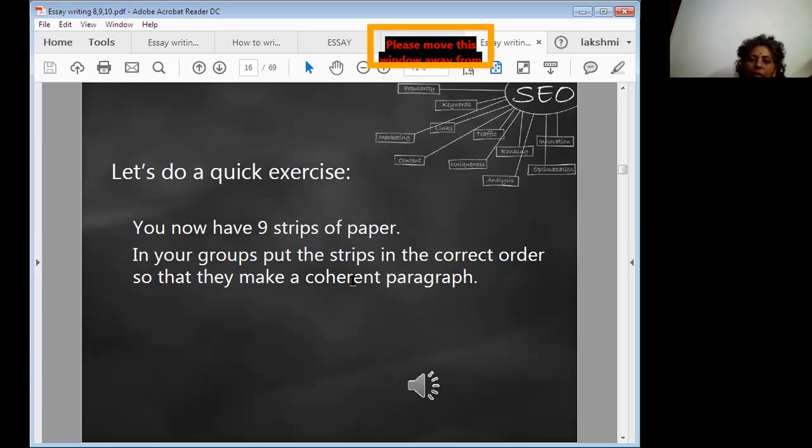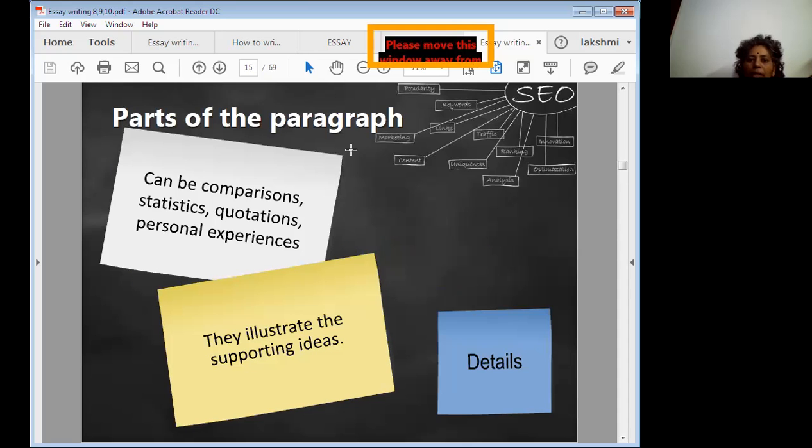Let us do a quick exercise. Take one paper and make that one as a strip of nine. In your groups, put the strips in the correct order so that they make a coherent paragraph. Now you are going to do one small exercise on how to do the correct paragraph. Take a paper, make it in nine strips, and share among you.